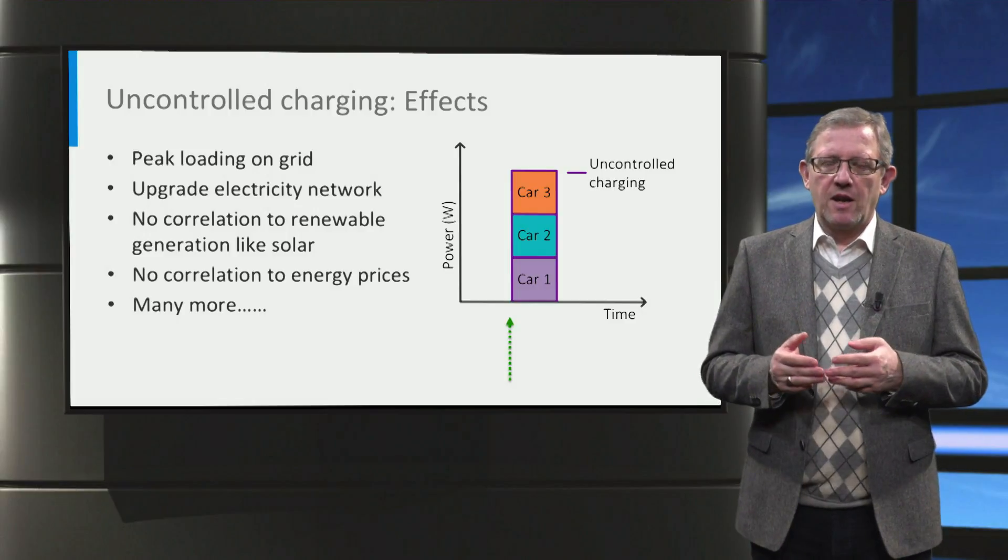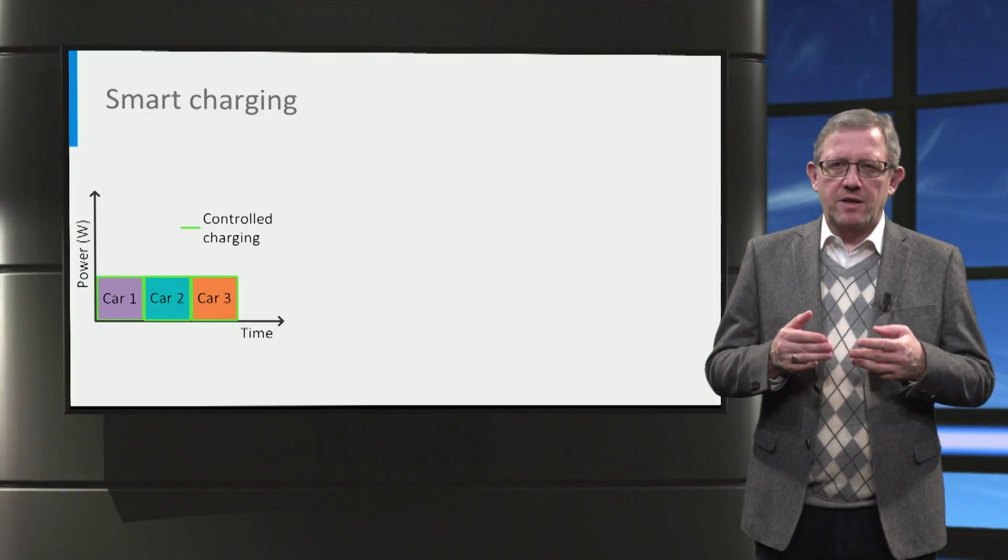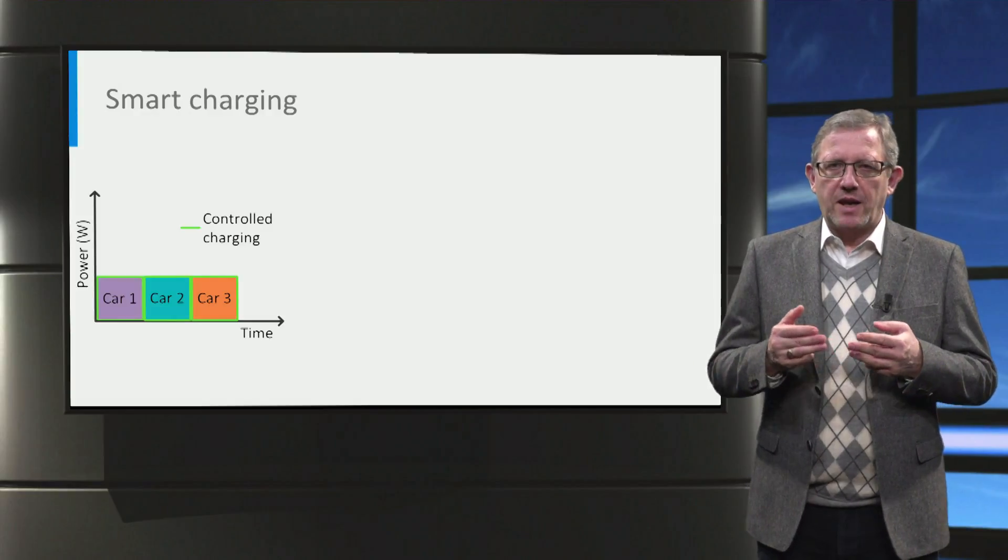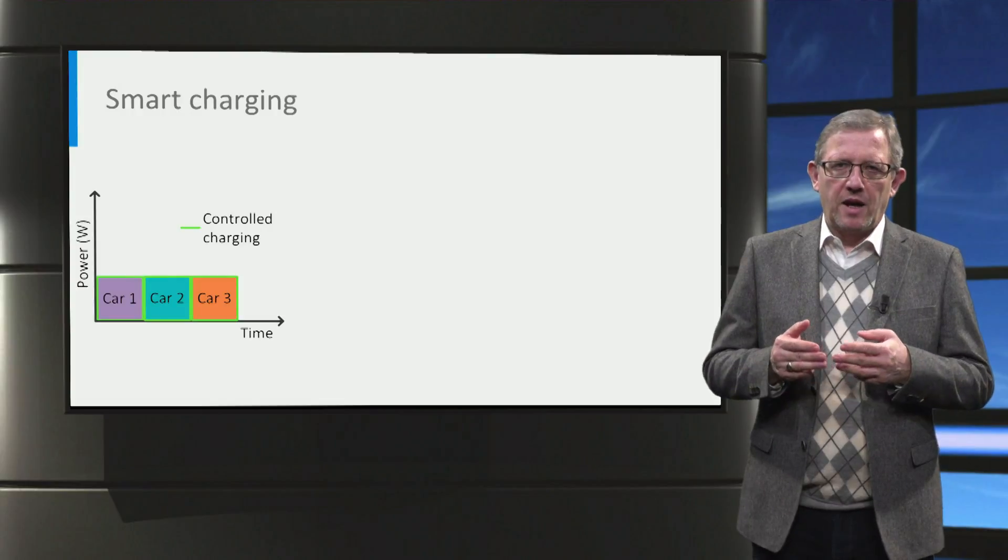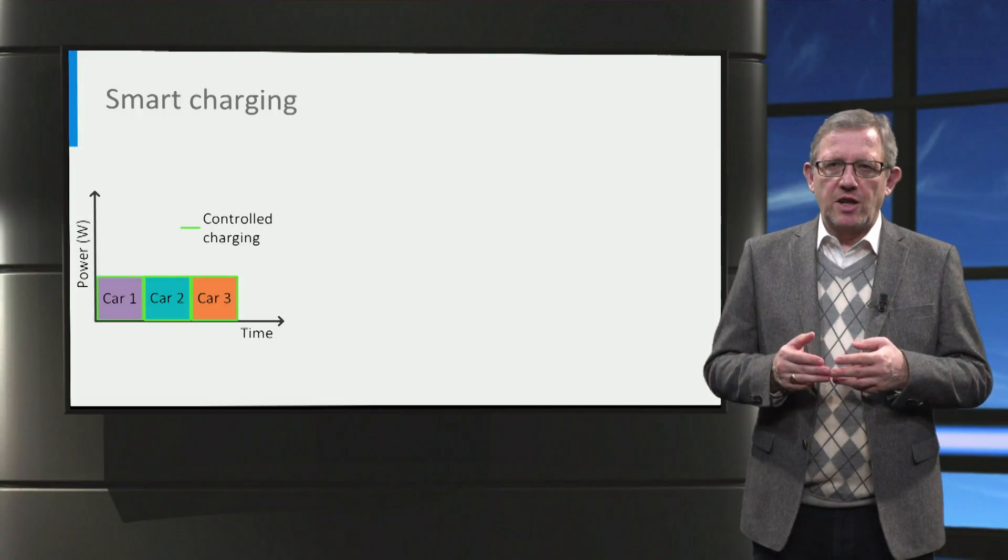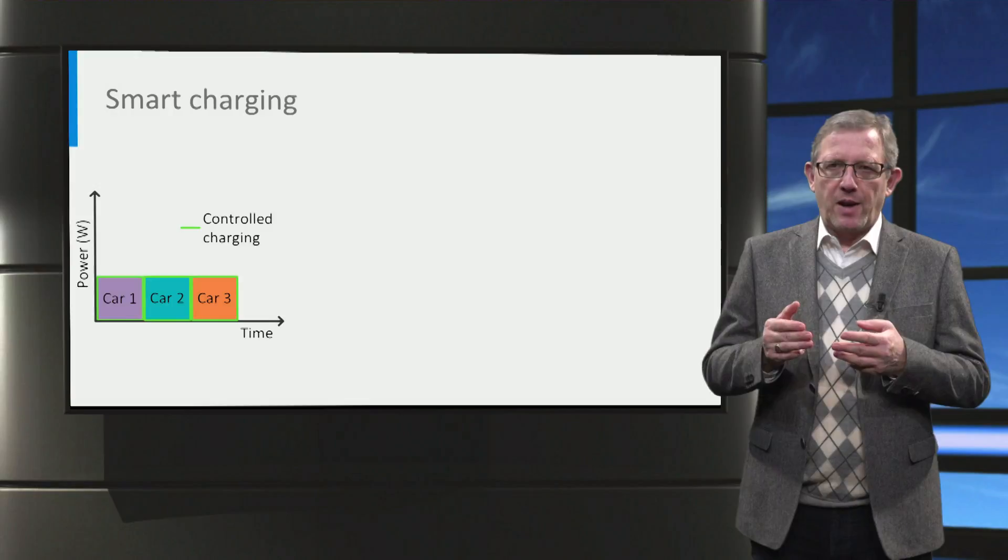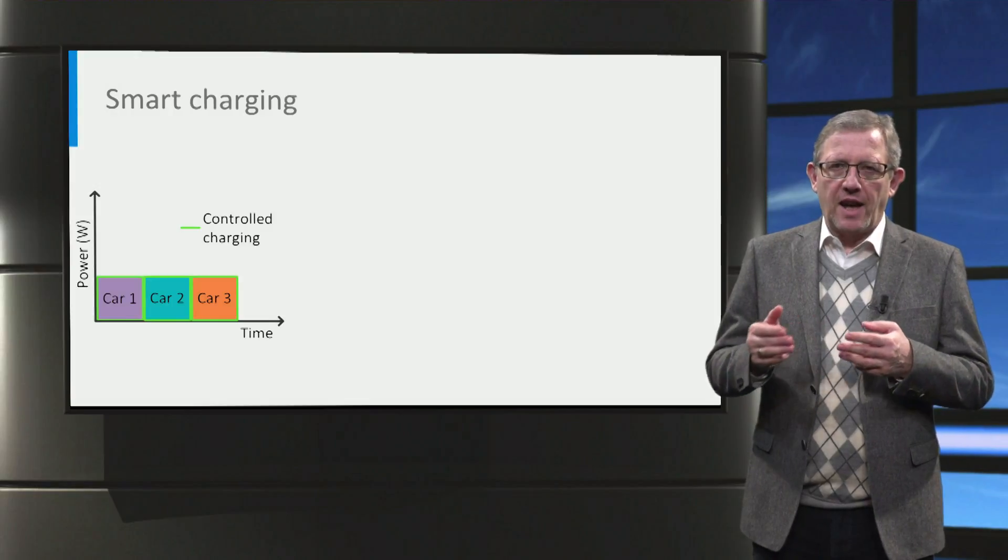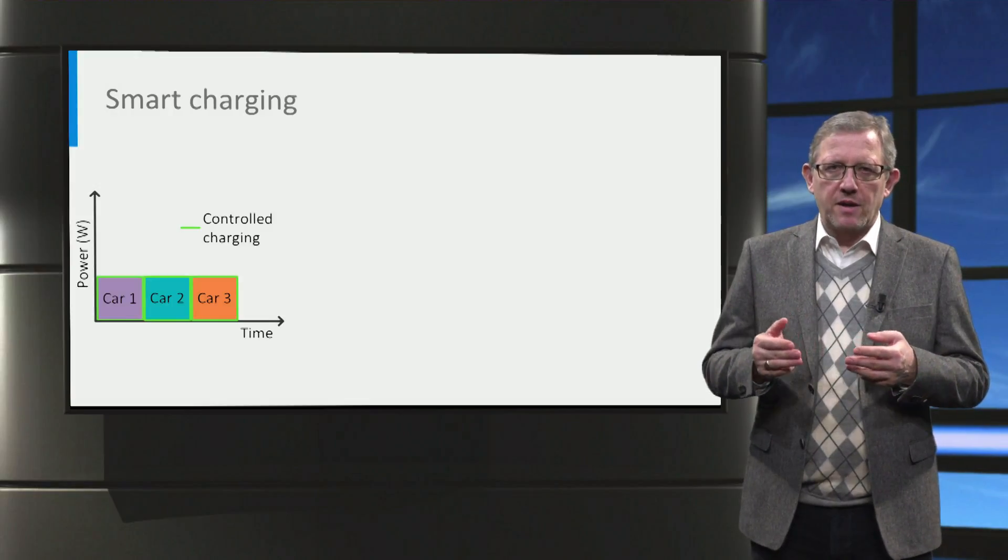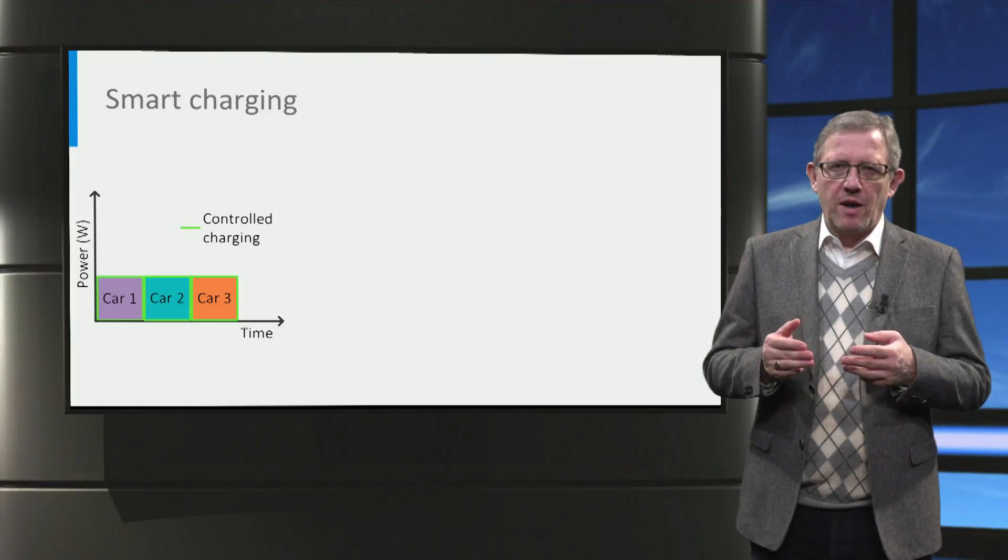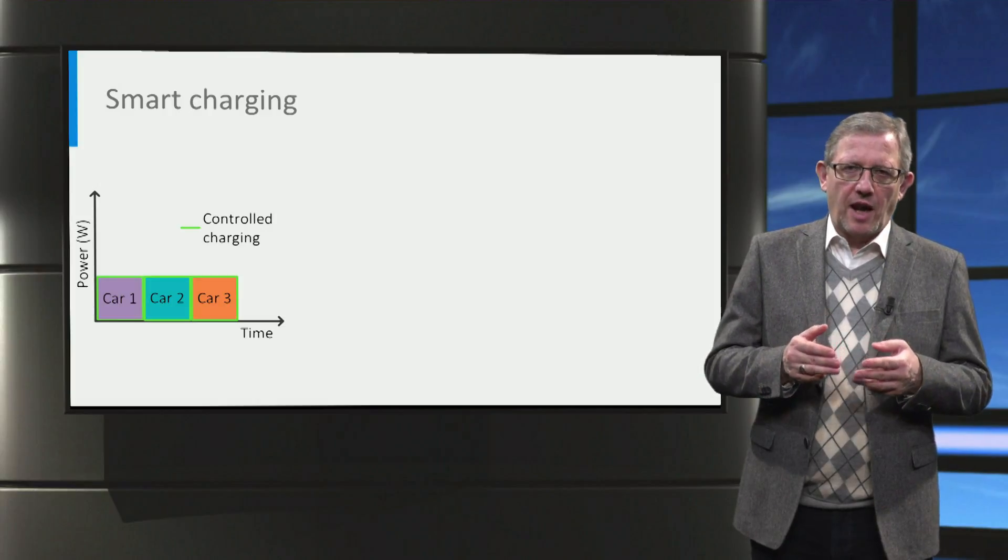Smart charging can help overcome these disadvantages. For example, if many cars are connected at the same time at the workplace, smart charging can help to plan and spread the charging power over the day. Here in this figure, one car is charged at a time, one after the other sequentially.